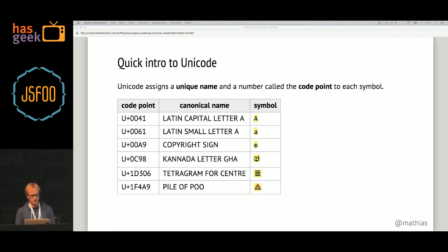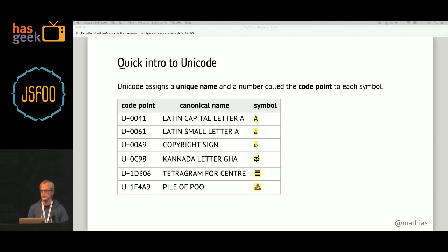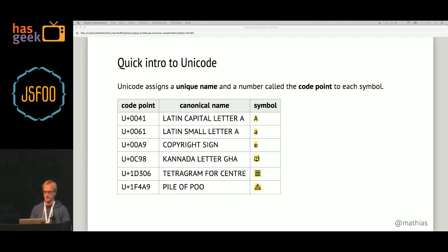There are some code points that need more than four hexadecimal digits to represent them. For example, the tetragram for center has the code point 1D306. And then there's also the pile of poo emoji — and many other emoji — that also require more than four hexadecimal digits to represent.